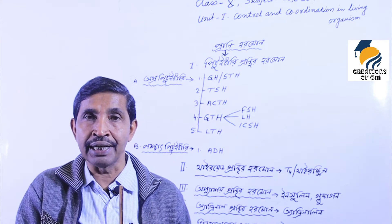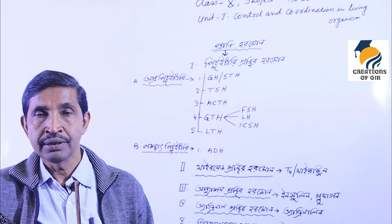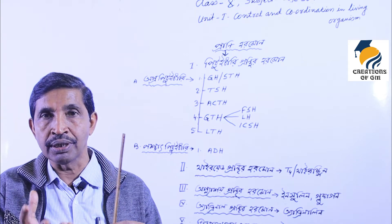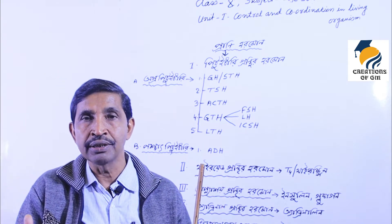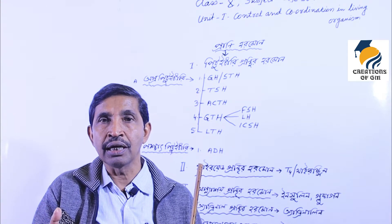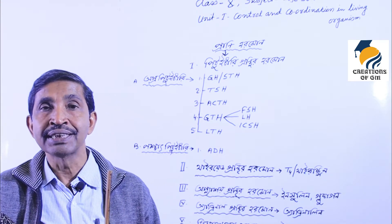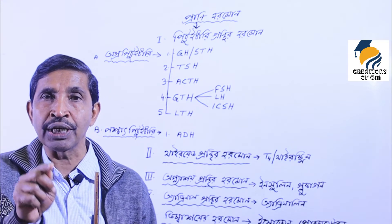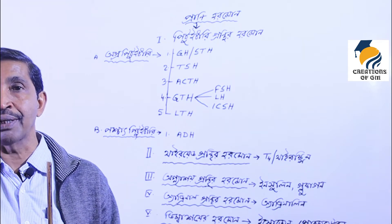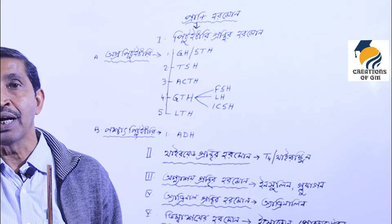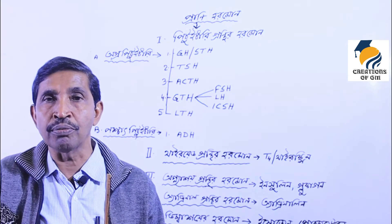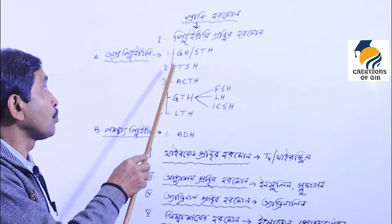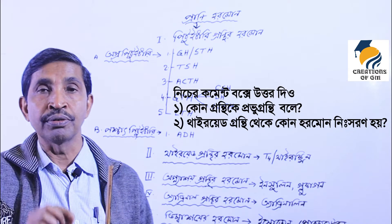If growth hormone is deficient in a person, that condition is called dwarfism. And if growth hormone is in excess, that condition is called gigantism. Next, the second hormone from the anterior pituitary is thyroid stimulating hormone (TSH).